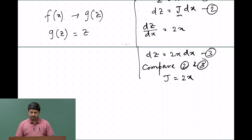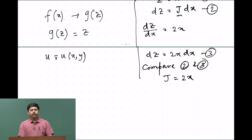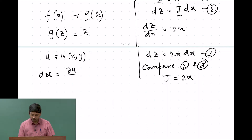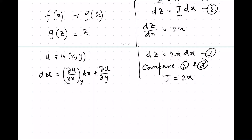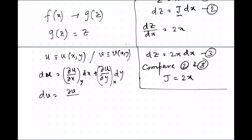Our function U depends on two variables X and Y. We can write the total differential as dU = (del U/del X)_Y dX + (del U/del Y)_X dY. Similarly, if V is also a function of X and Y, then dV = (del V/del X)_Y dX + (del V/del Y)_X dY. These are equation 4 and equation 5.